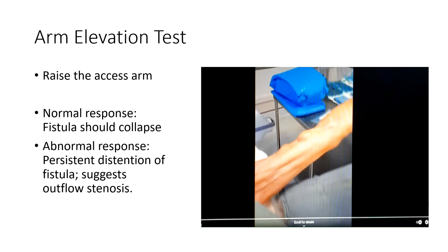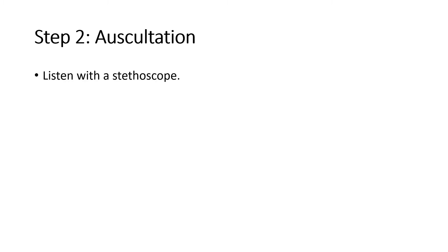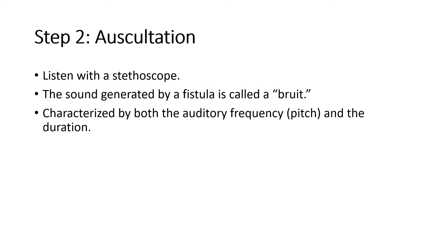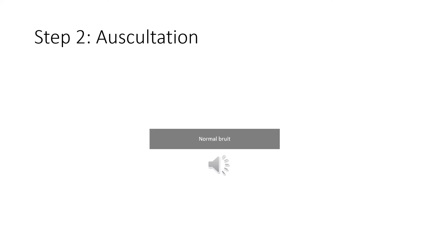The next part of physical evaluation is auscultation, or listening, done with a stethoscope. The sound generated by a fistula or graft is called a bruit. A bruit is described not only by its pitch but also by its duration — whether there is both a systolic and a diastolic component. Normally, a fistula should have a low-pitched, soft, machinery-like rumbling sound, generally loudest at the arterial anastomosis. It is a continuous sound with both a systolic and a diastolic component.